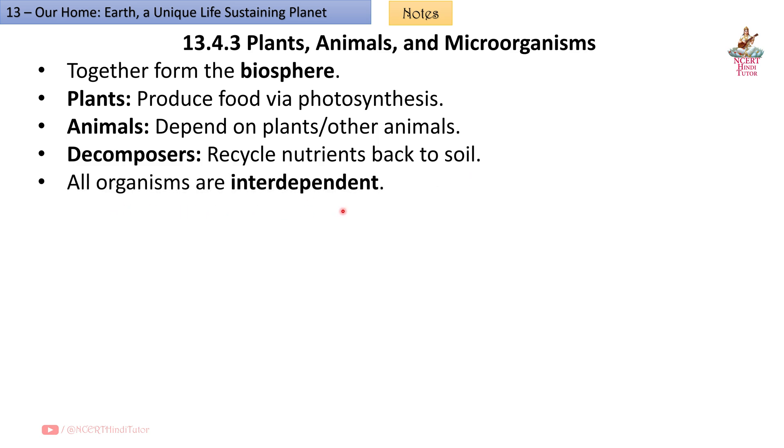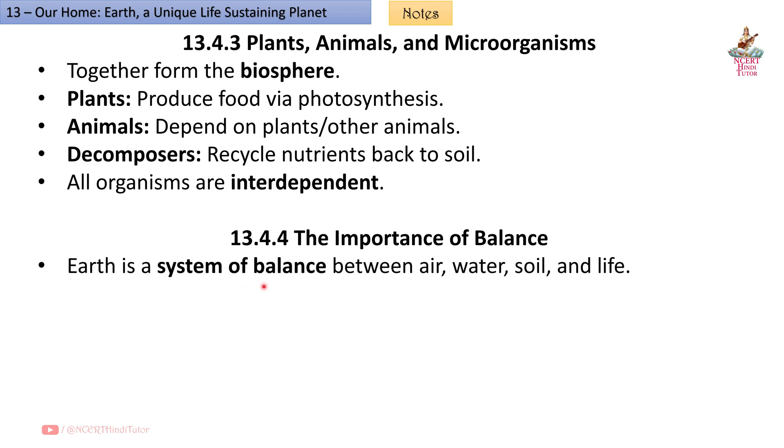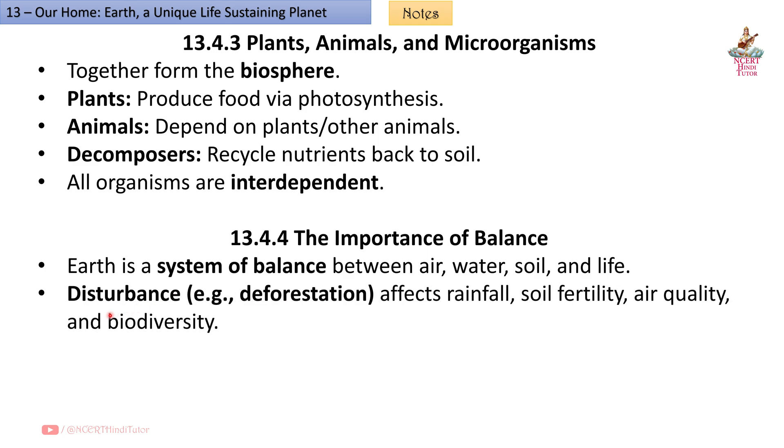13.4.4 The importance of balance: Earth is a system of balance between air, water, soil and life. Disturbance, for example deforestation, affects rainfall, soil fertility, air quality and biodiversity. Balance is essential for Earth's habitability.